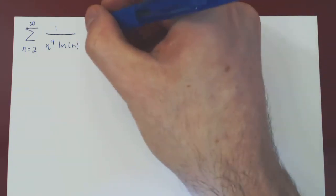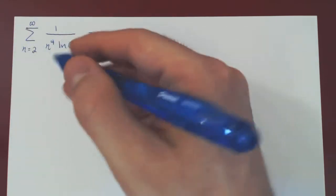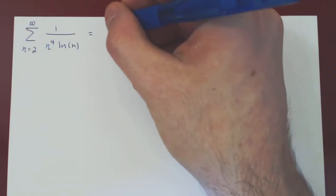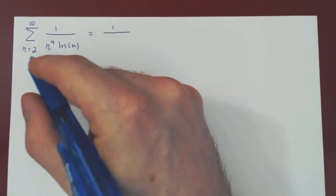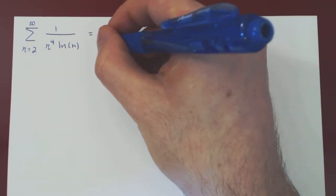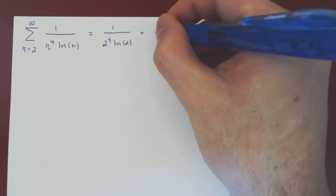Before we do so, let's expand out the first few terms of our infinite series to get a feeling for what kind of terms we're summing. So 1 over when n is 2, as the sum begins at 2, will give us 1 over 2 to the 4, ln of 2, plus when n is 3,